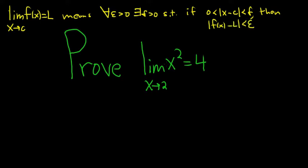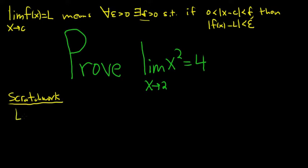We have to use this definition to prove that this limit is equal to 4. First we have to come up with our delta, then we actually write the proof. So first we're going to do the scratch work — this is the hard part. Once we have the scratch work done, the proof is pretty routine.